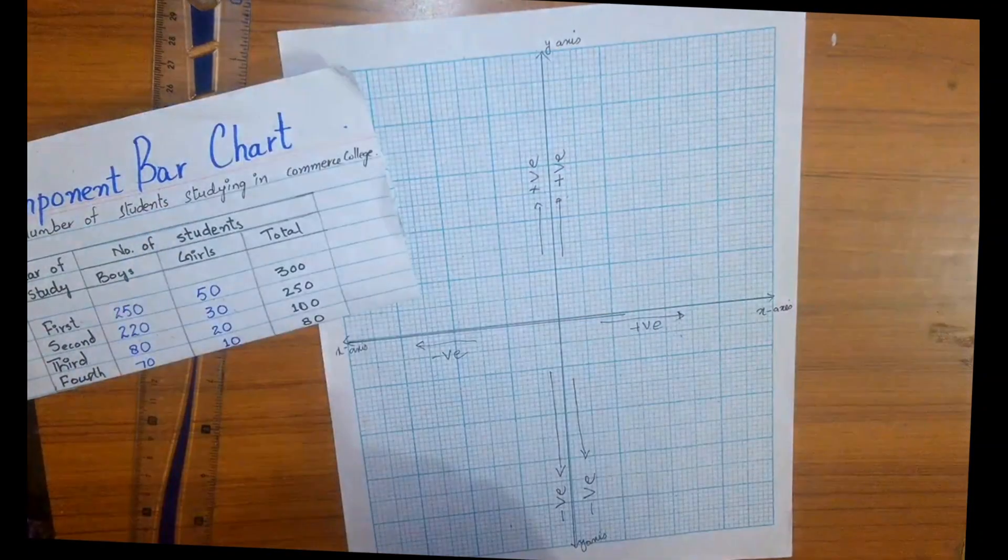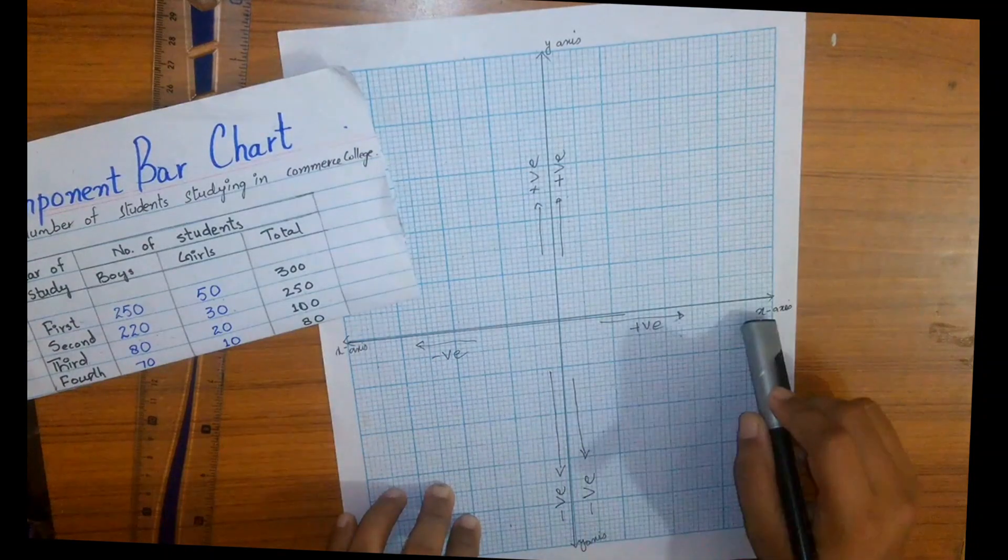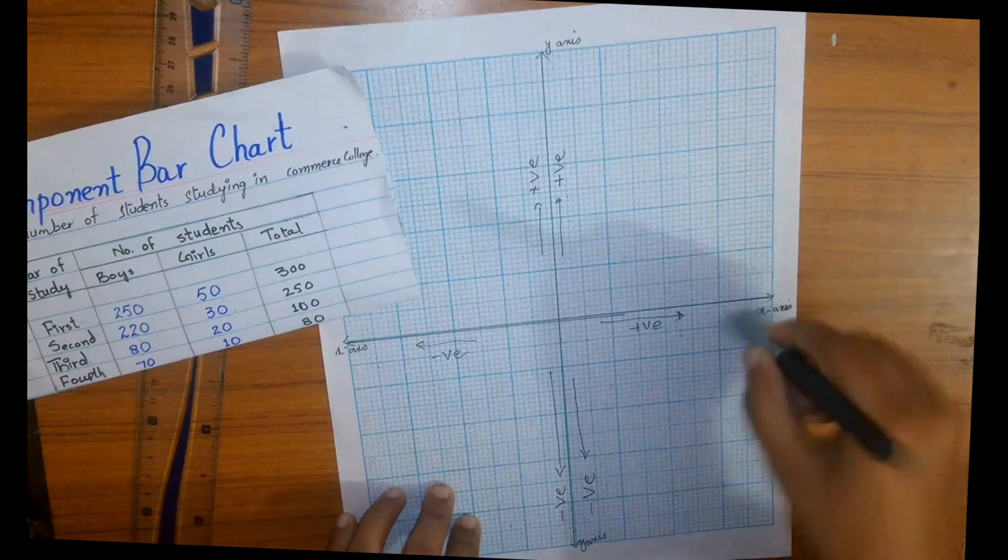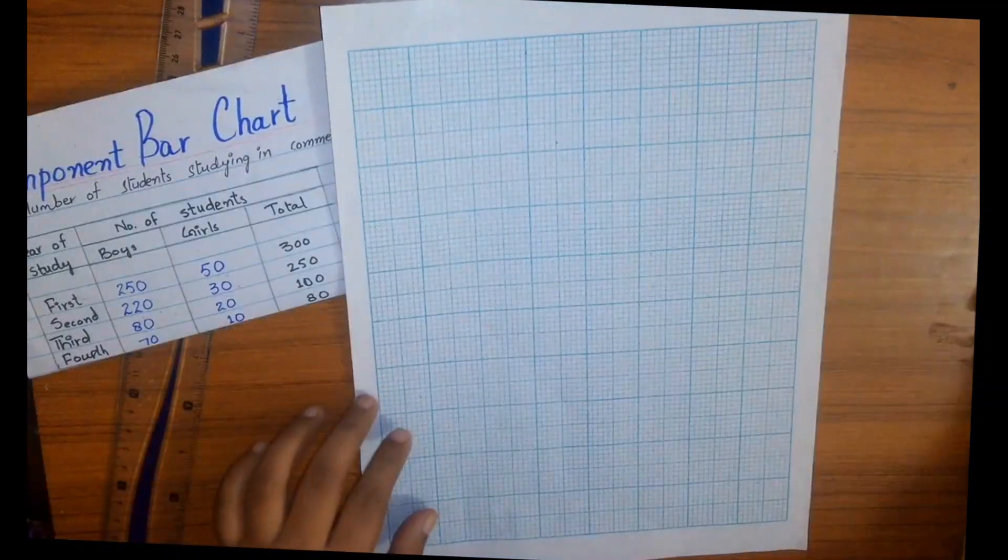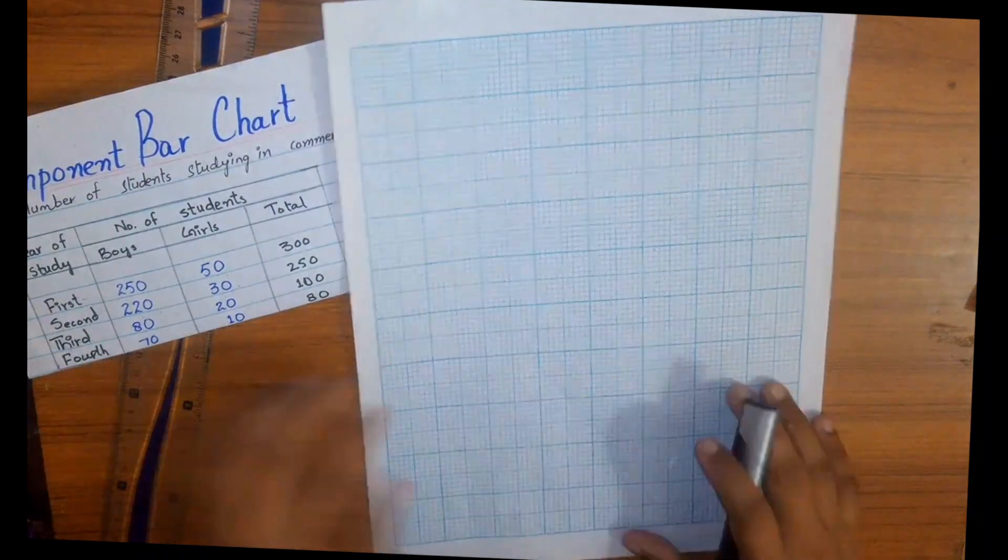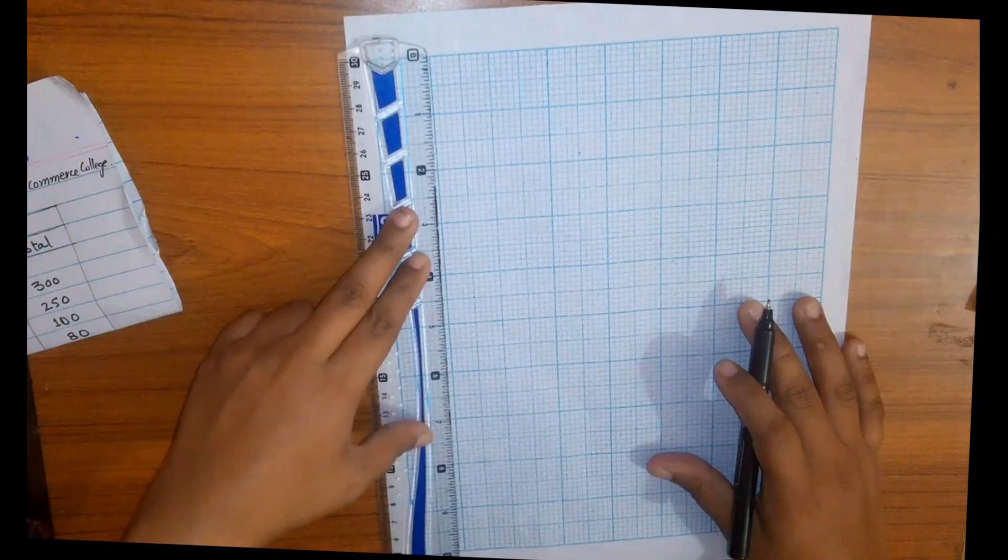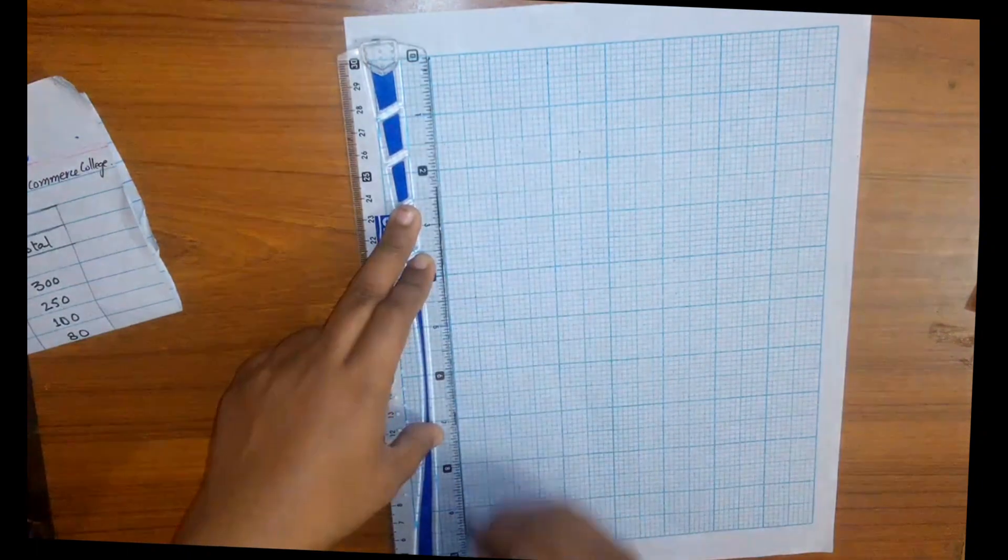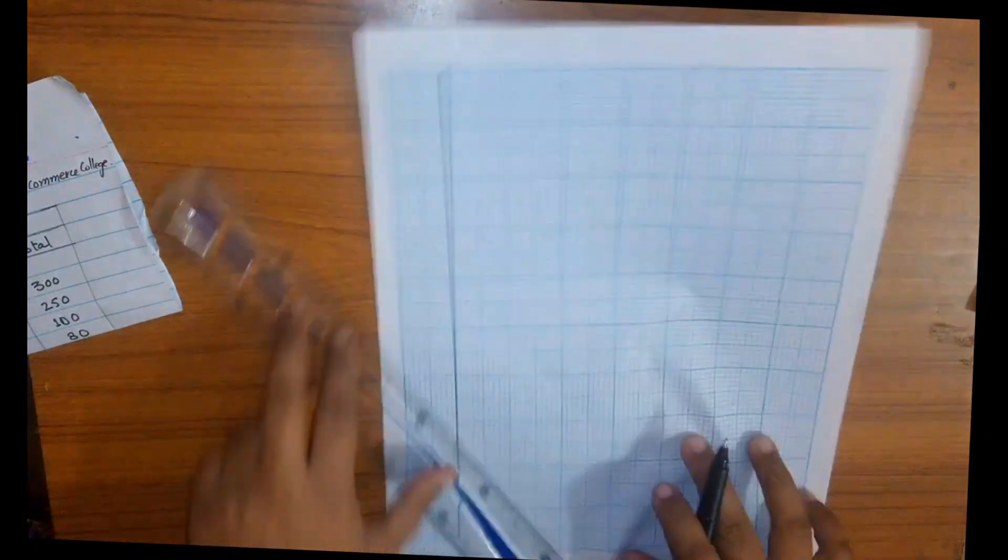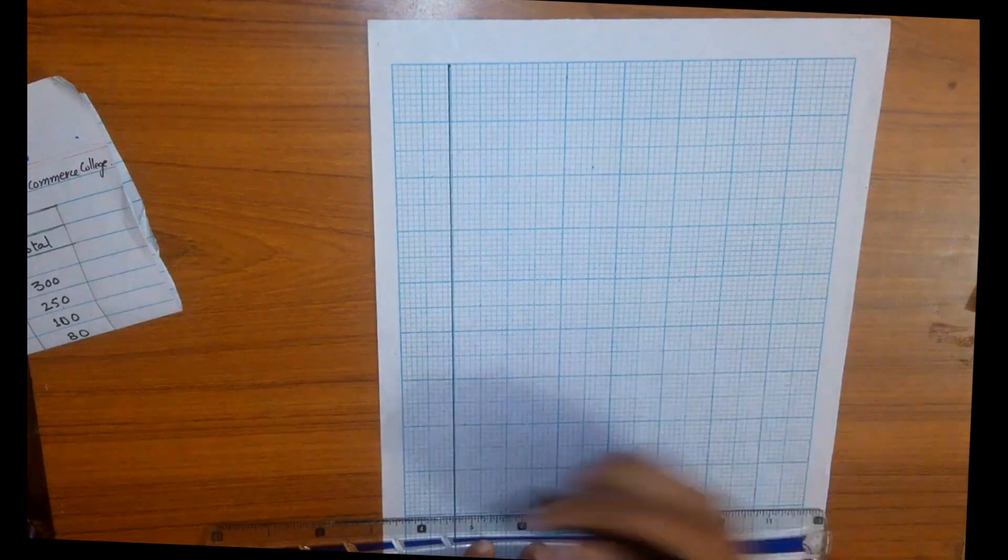Simply enlarge your first quadrant on graph paper. Make the vertical axis on the extreme left and draw the horizontal axis on the extreme bottom.